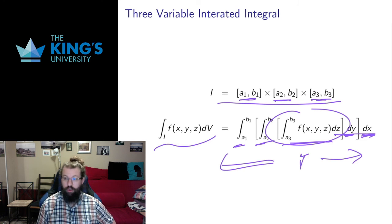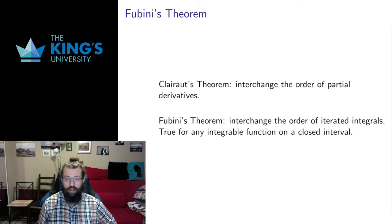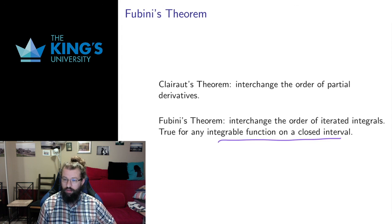And you might wonder why I put it in this order, z, y, and x. Well you may recall we had Clairaut's theorem that told us we could interchange the order of partial derivatives. There's a lovely parallel theorem that we have in this course called Fubini's theorem that tells us I can actually change the order. I can do the order of the iterated integrals in any order I want, and that's true for any integrable function on a closed interval. So the order I chose of z, y, x in the previous slide, I could have chosen any of the six permutations of x, y, and z, and any of those orders would have given me the same result.